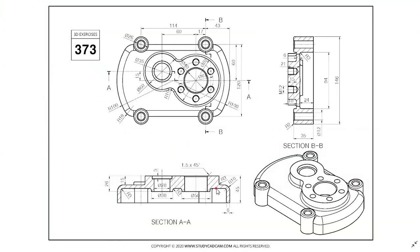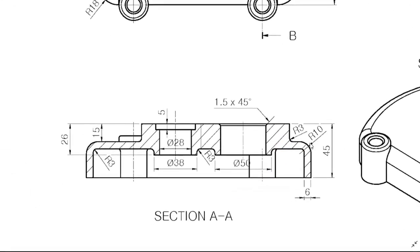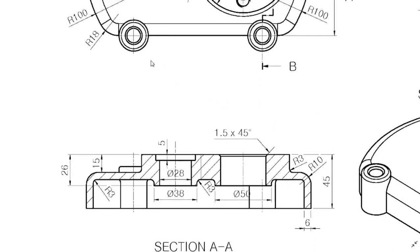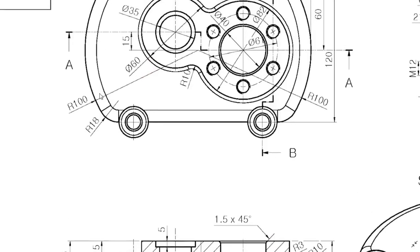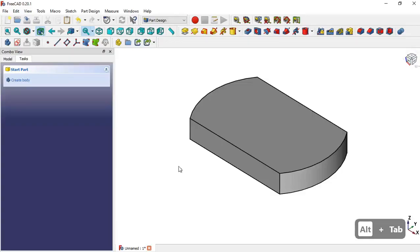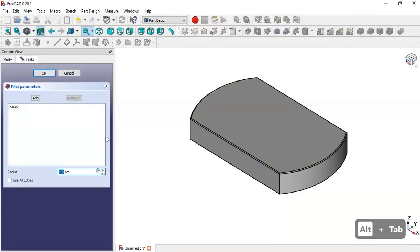The next operation is to apply a fillet on the top face. We have 10 millimeters here and a fillet of 18 millimeters. So we select this face and go to the fillet tool, change the dimension to 10 millimeters, and click OK.